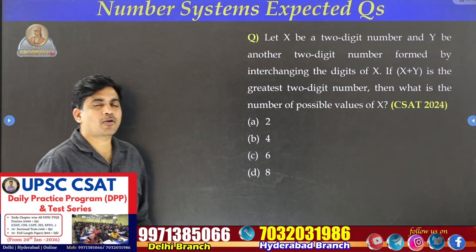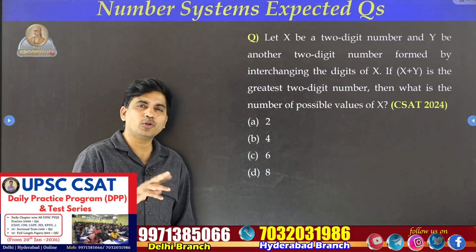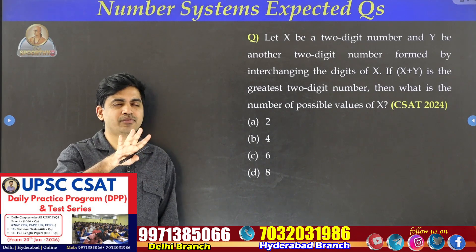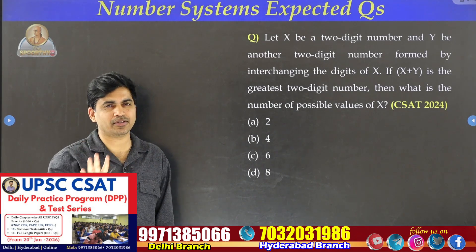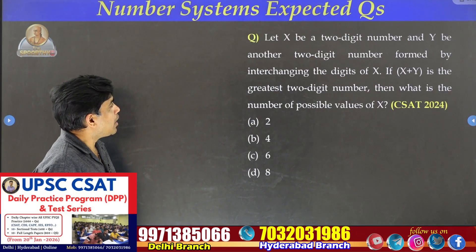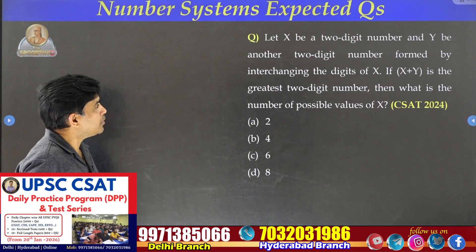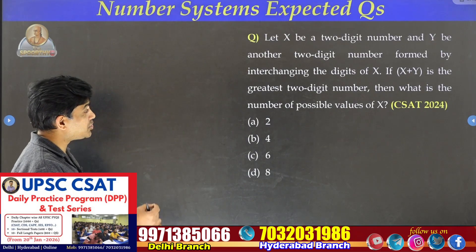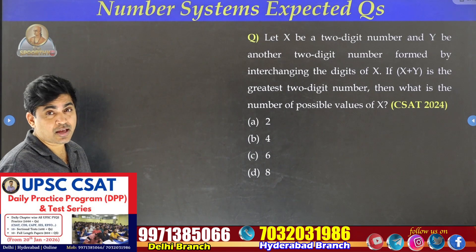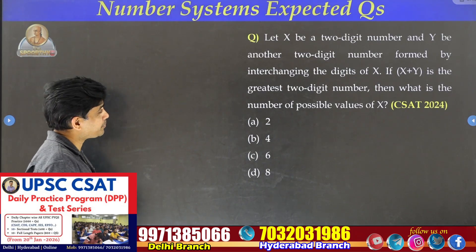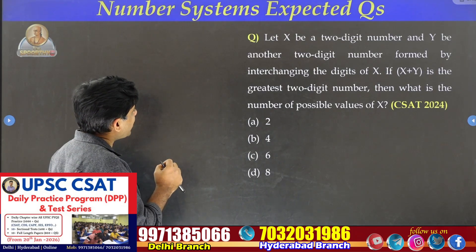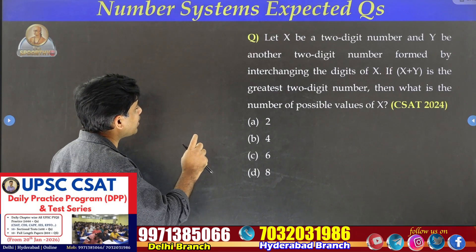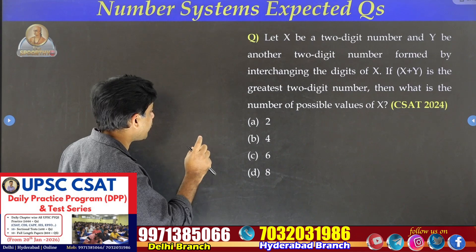This is a very popular concept — taking a 2-digit number and its reverse number, adding them, finding the difference. Let x be a 2-digit number and y is another 2-digit number formed by interchanging the digits of x, meaning it is the reverse number. If x plus y is the greatest 2-digit number, then what is the number of possible values of x?